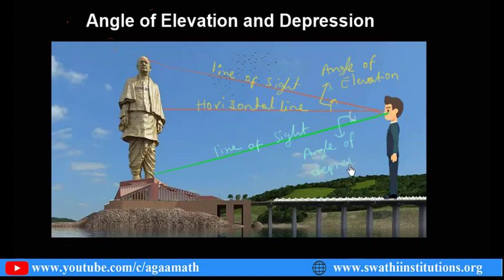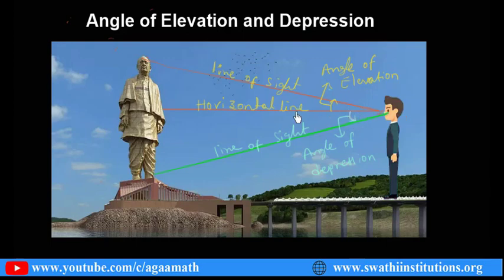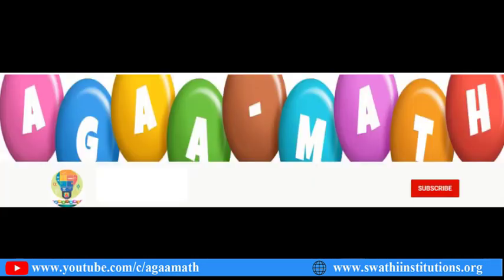Clear: if the angle is higher than your horizontal line — meaning your line of sight goes upward to the top — that is the angle of elevation. When you look at the foot of the statue, which is lower than your horizontal line, the angle formed is the angle of depression.